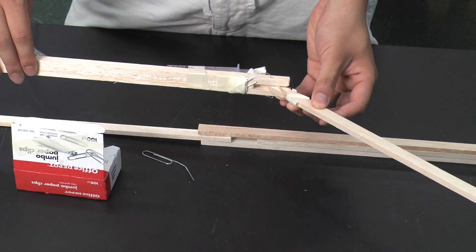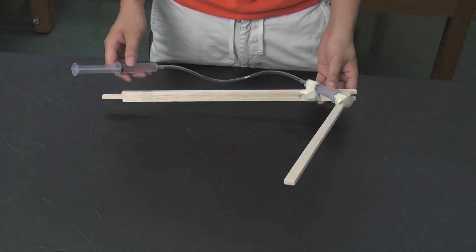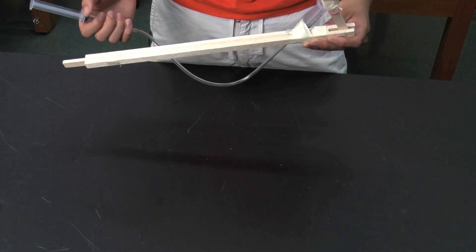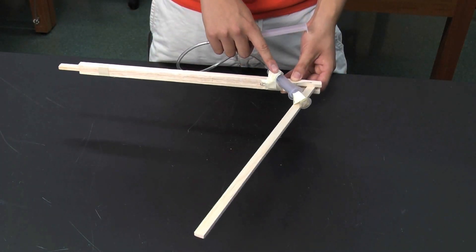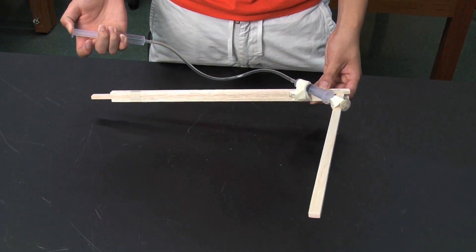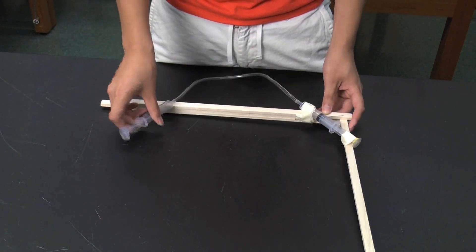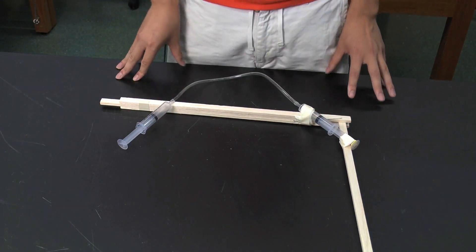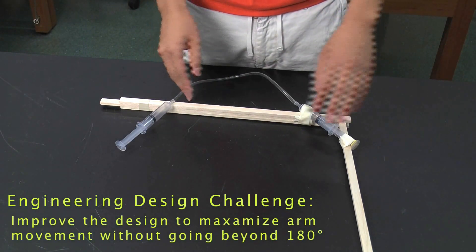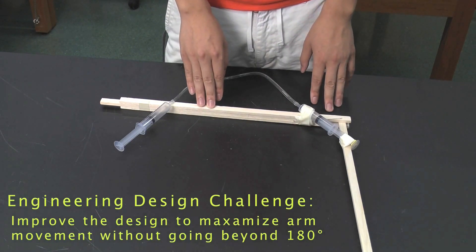This is what you would demonstrate for the class in the next part of the activity. For a prototype demonstration for the second part, attach a syringe like this so that the arm can move just a little bit. In this case, the arm has a very limited range of motion. The engineering design challenge presented to students is to improve this design to make the arm move as much as possible, but without going further than 180 degrees.